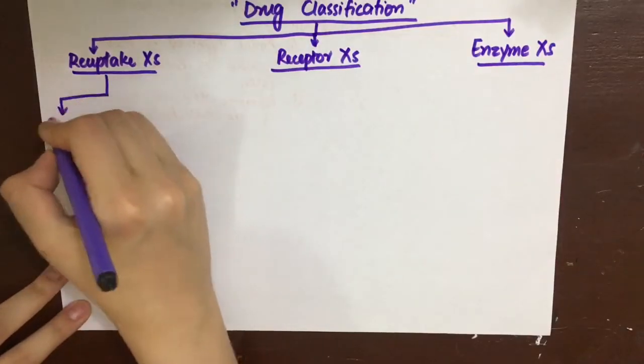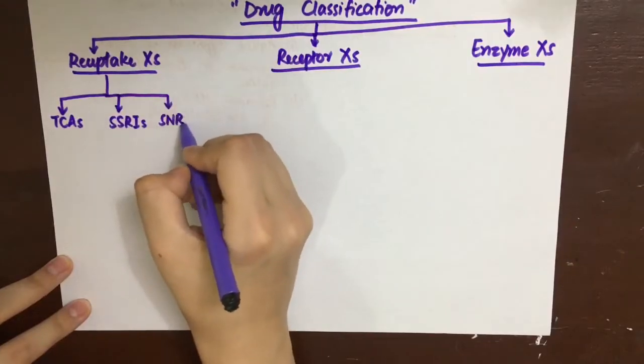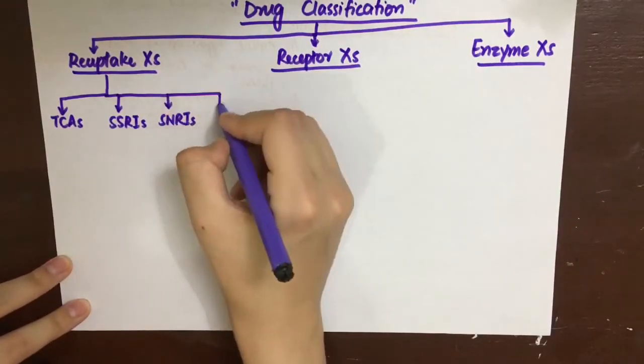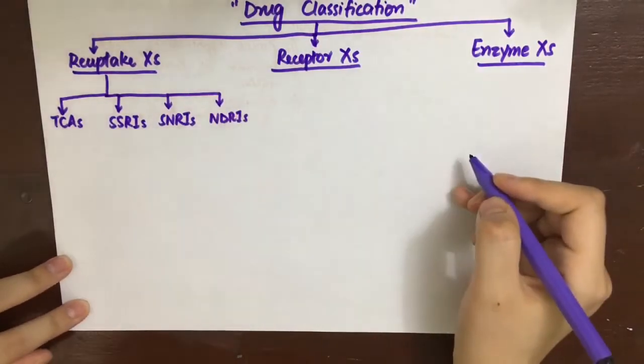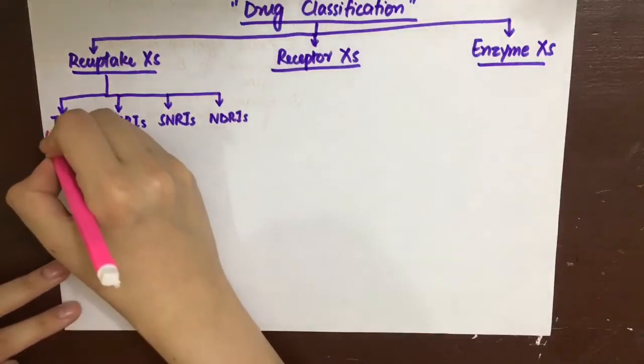First, we'll see the reuptake inhibitors. First are TCAs, tricyclic antidepressants. Second are selective serotonin reuptake inhibitors. Third are serotonin noradrenaline reuptake inhibitors. And lastly, noradrenaline dopamine reuptake inhibitors.